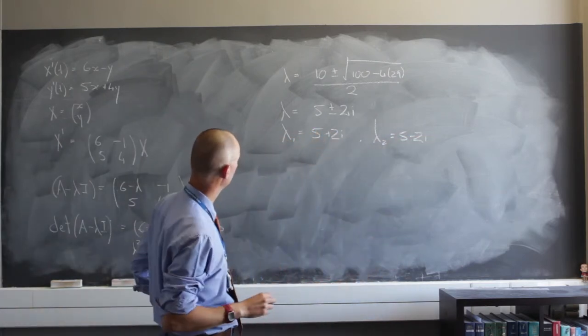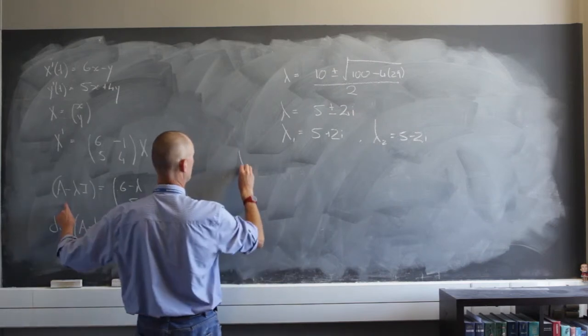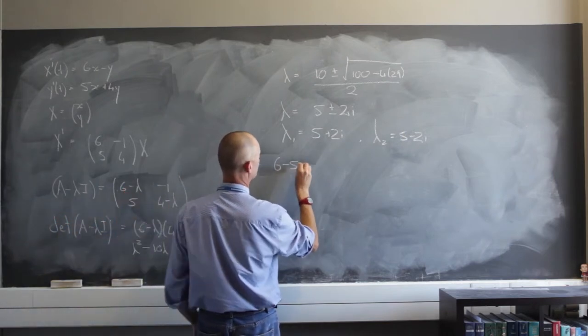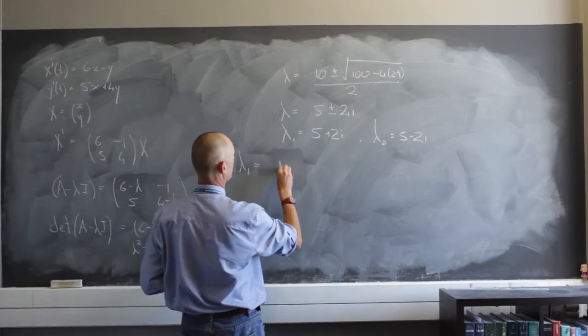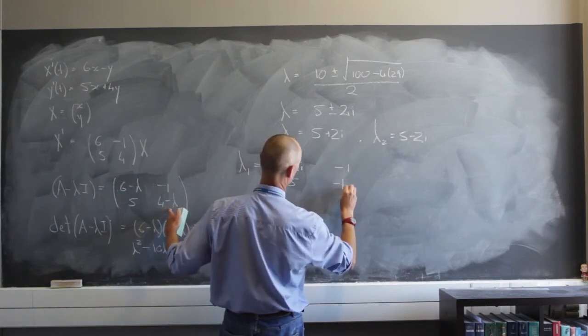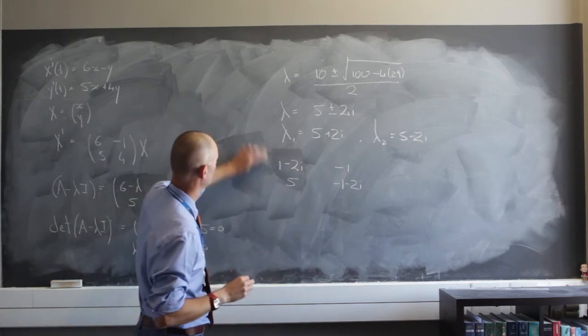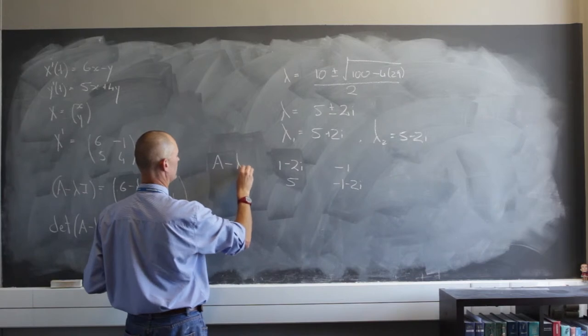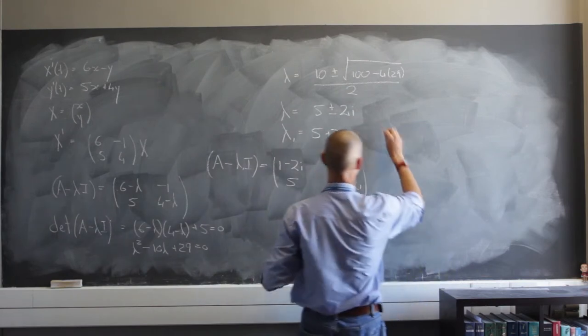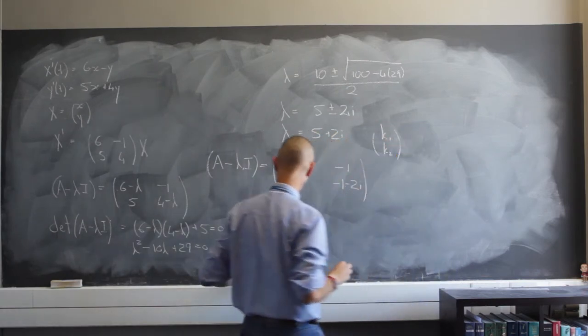So I have complex eigenvalues here. Now let's start with lambda sub 1. So that is going to be 6 minus 5, which is just 1, 1 minus 2i. I'm going to have the negative 1 there. I'm going to have the 5 there. And then 4 minus 5 minus 2i, that's negative 1 minus 2i. So that is what I'm going to get for A minus lambda sub 1 I. I have to multiply this by k. Let me just make some space.